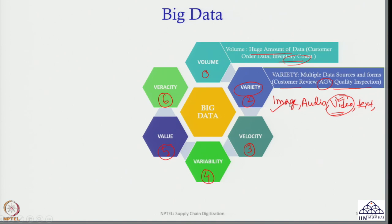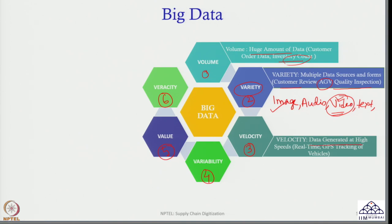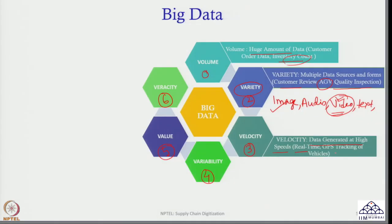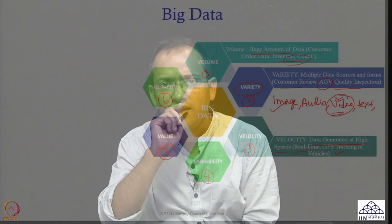The next V is velocity: data generated at a very high speed, in real time. Every fraction of a second, a lot of data is being generated. In e-commerce, 24 by 7, you can place an order from any part of the world, generating a huge volume of data at high speed and in real time. Another example is GPS tracking of vehicles — good logistics service providers have GPS installed in trucks, which is not a very costly technology to adopt.